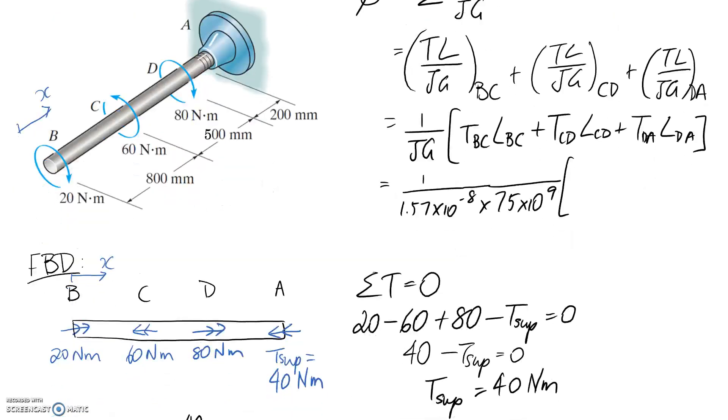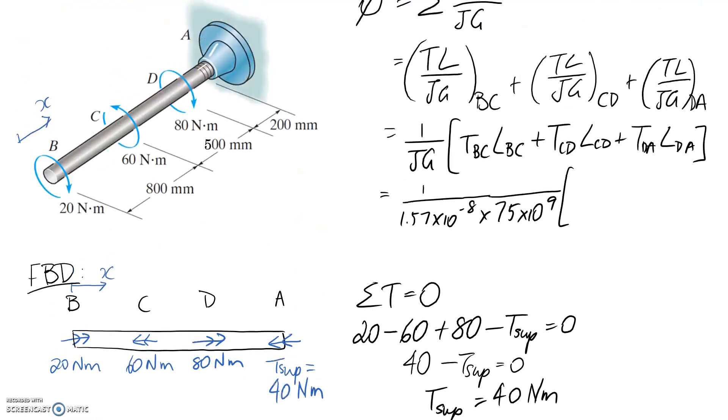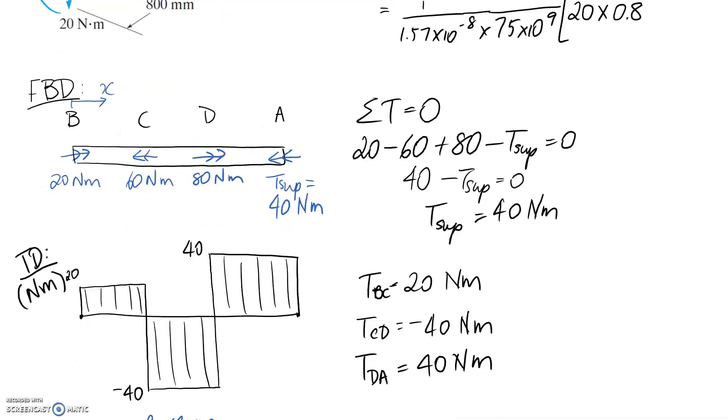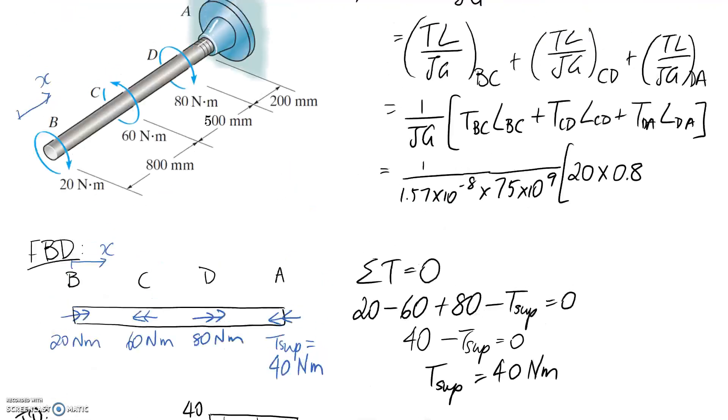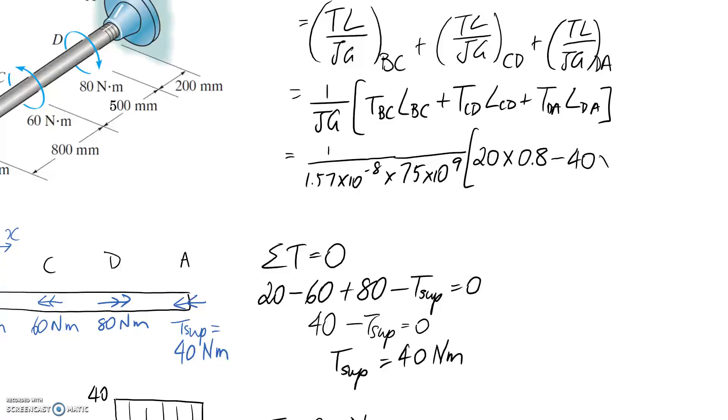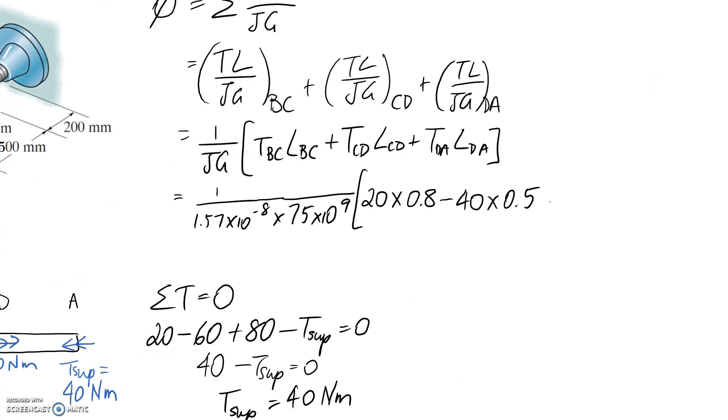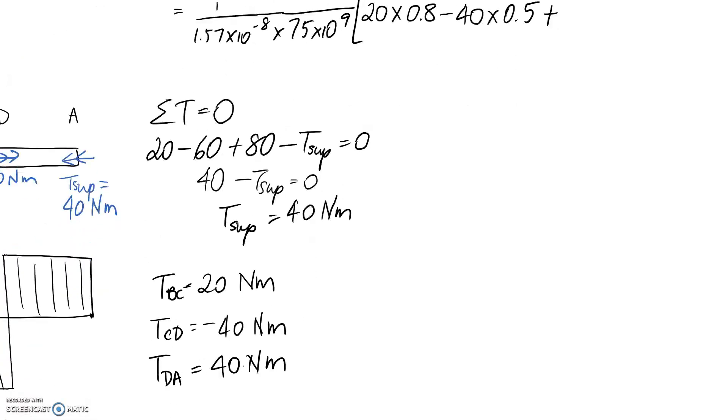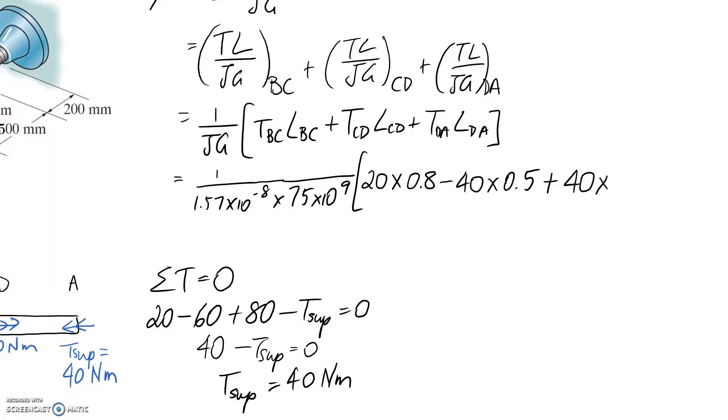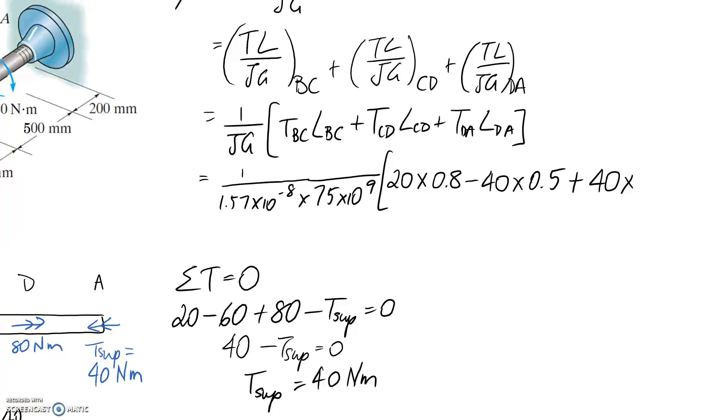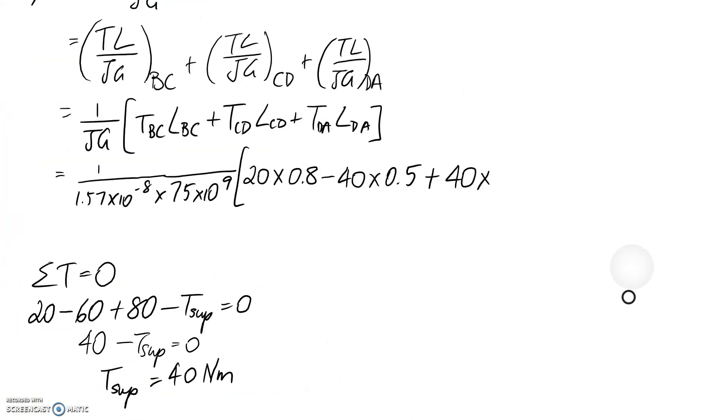We should now be able to substitute in. J we just figured out, it's 1.57×10^-8, and we multiply it by the G value which is 75. I'm going to convert everything to base units, so giga means 10^9. Next we have the torque times length. Torque for section BC was 20 newton metres in the positive direction, so we're subbing it in as a positive value. The length of BC is 800 millimetres, which is 0.8 metres. Next we need the torque through section CD, which was negative 40 because it was spinning in the negative direction. The length of the CD section is 500 millimetres, which is 0.5 metres. The last one, the torque through section DA, is positive 40 because it's rotating in the positive direction. The length of that section is 200 millimetres, or 0.2 metres.